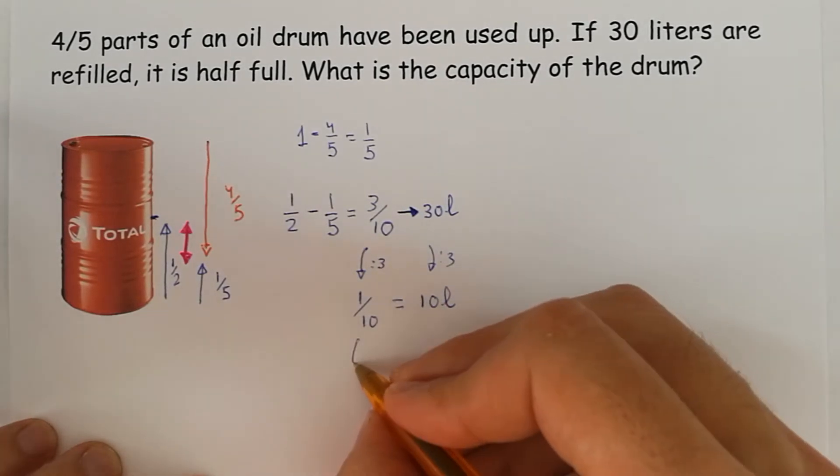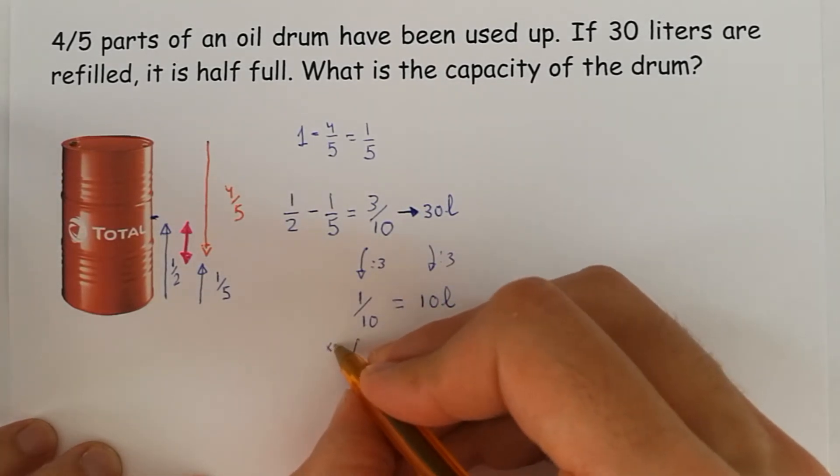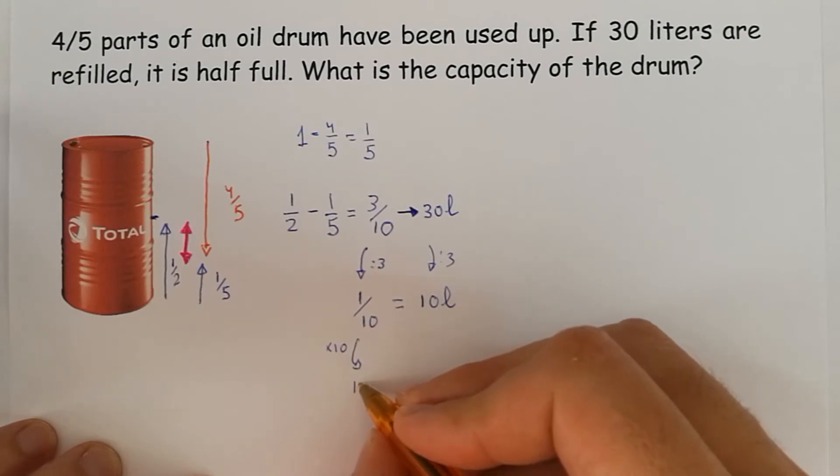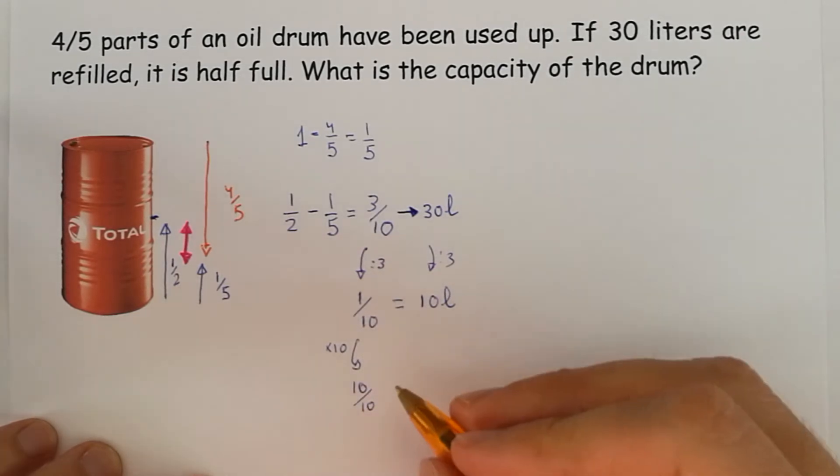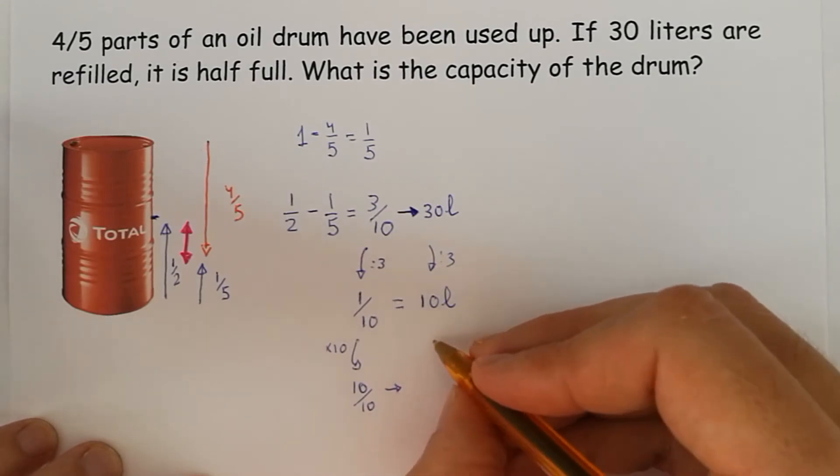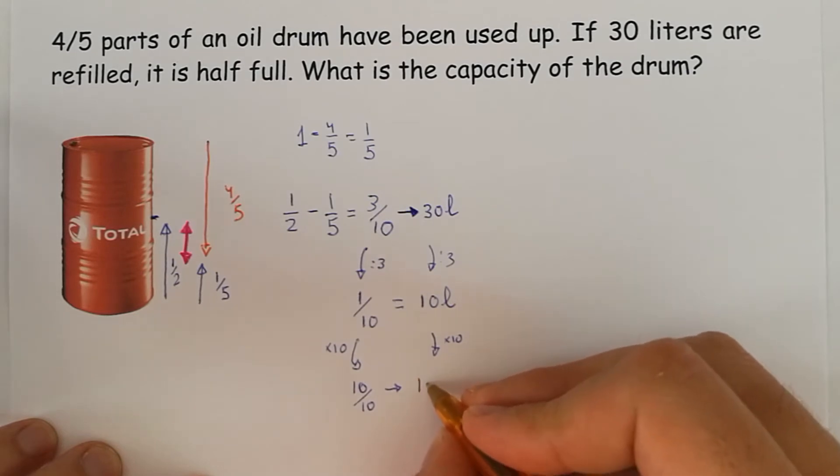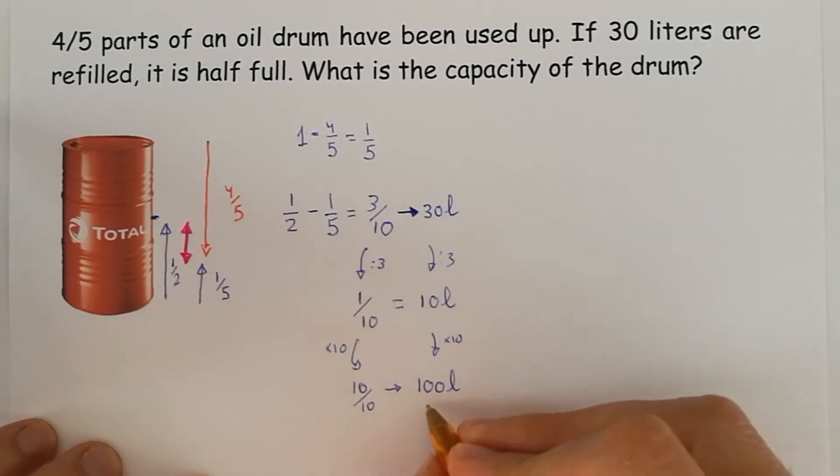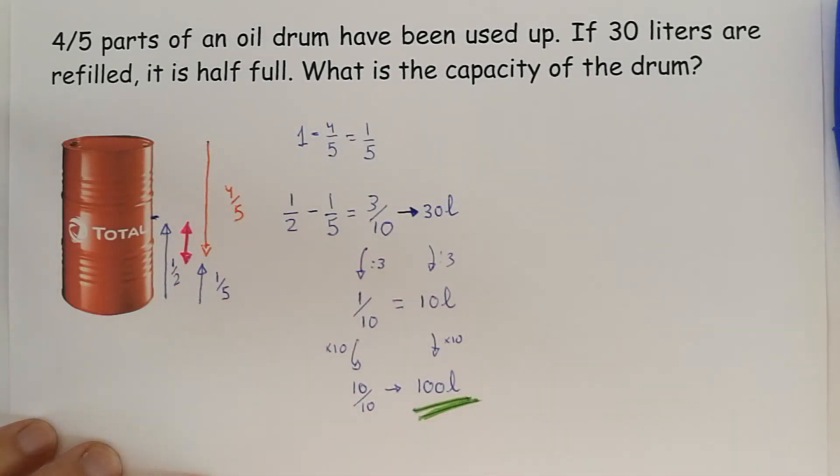Finally, if we multiply by 10, we get 10 over 10, that is one drum, the oil drum complete, and we get, in the other side, the result is 100 liters. That is the result without using algebra.